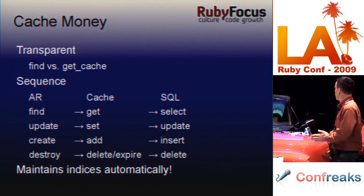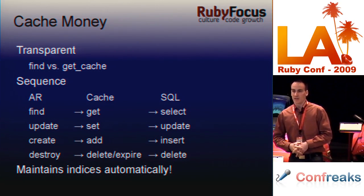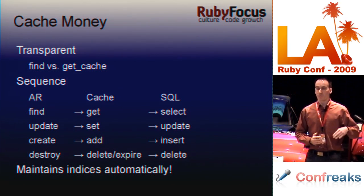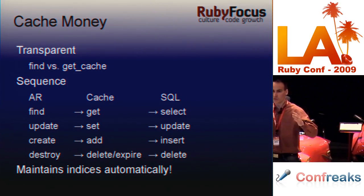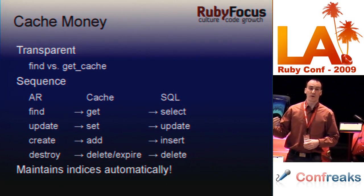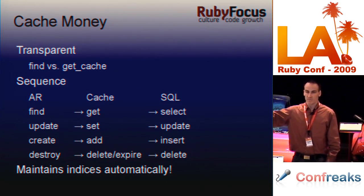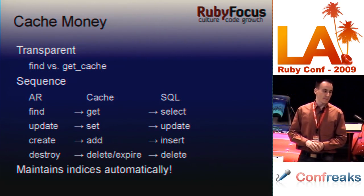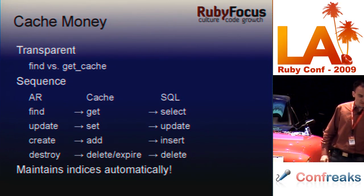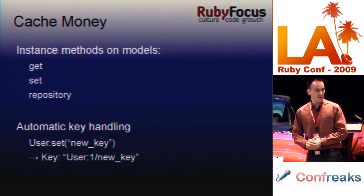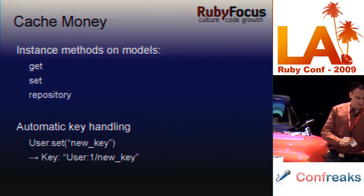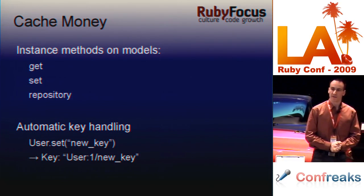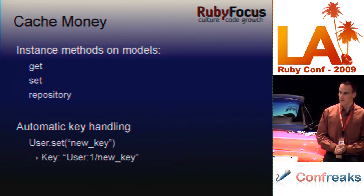Cache_money also maintains indices automatically. Just like in your migration file you specify a database index, now in your model file you specify what's indexed. The primary key is automatically indexed, but if you look things up by name — like find with conditions name equals something — cache_money will maintain that index for you. It also monitors new record creations and deletions, and the key handling is automatic. Cache_money will monitor if a new record is created or deleted, and it expires and maintains indexing for you automatically.